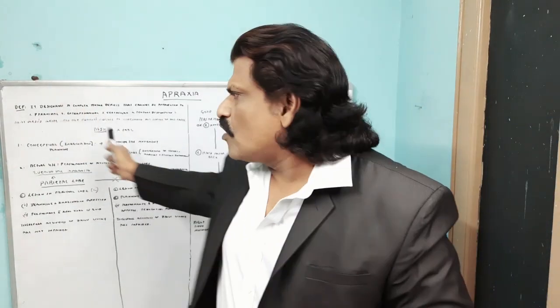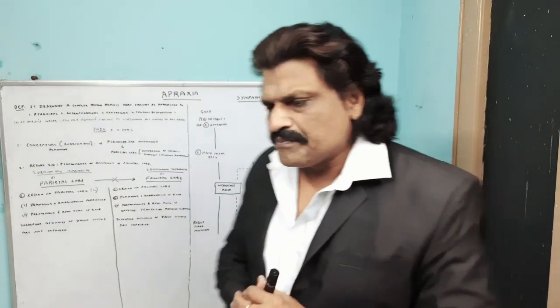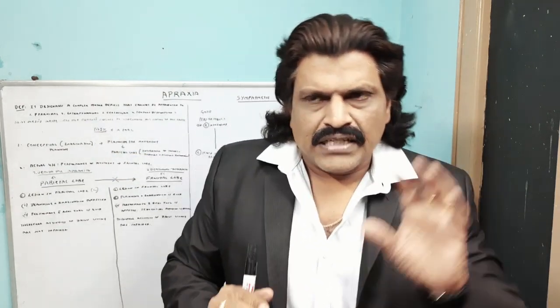The frontal lobe is responsible for performance of the movement — the actual performance. So if you understand these two concepts, it is very easy to understand apraxia. The parietal lobe is for planning of a movement and the frontal lobe is for the performance of the movement. These are the two lobes which are responsible for apraxia to appear if there is a dysfunction.